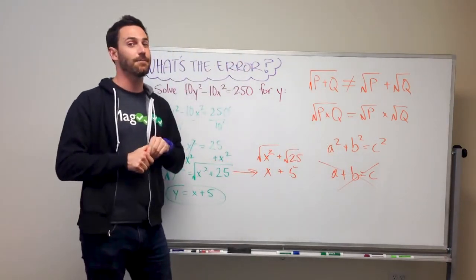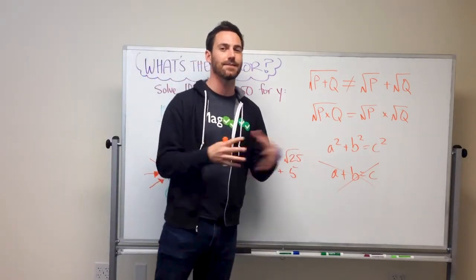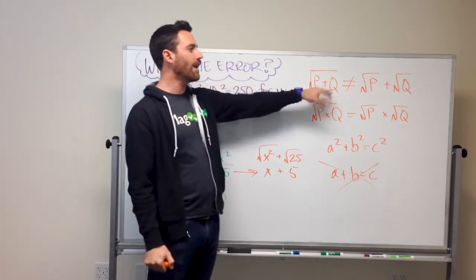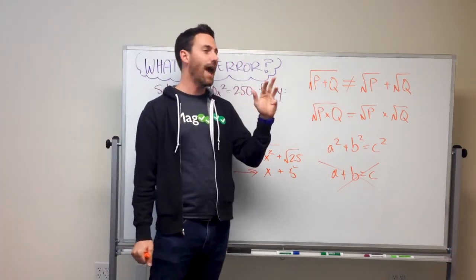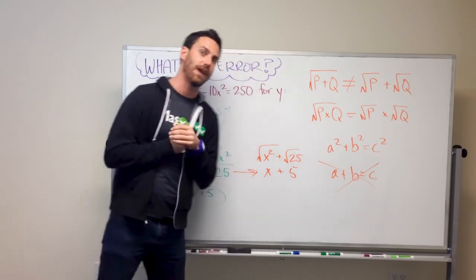But, in this case, Mr. Pythagoras has given us the easiest version. So, remember that when you're adding or subtracting, you cannot take the square root of both of the items that are there.